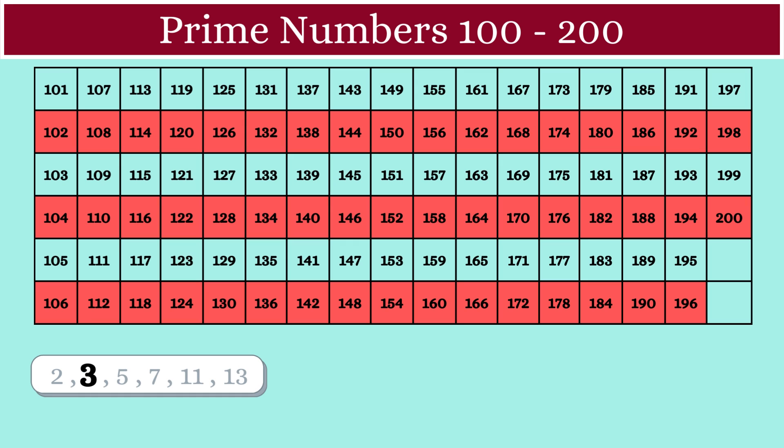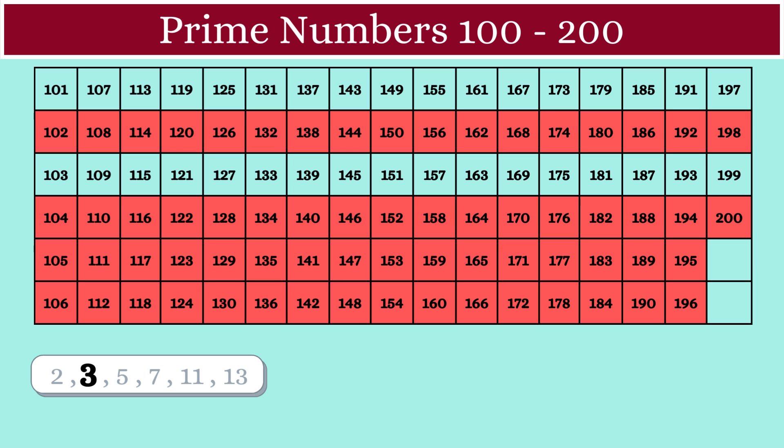Next, number 3. This row and this row have all the multiples of 3, so we will mark these numbers also as composite numbers.